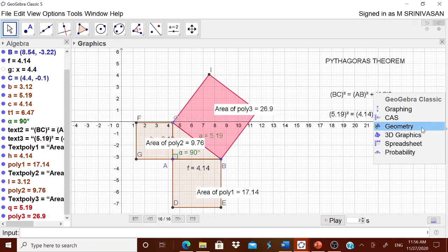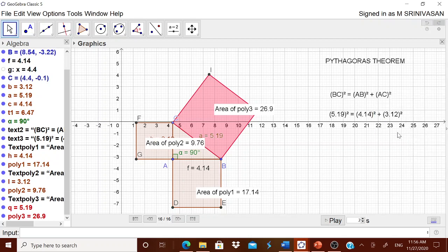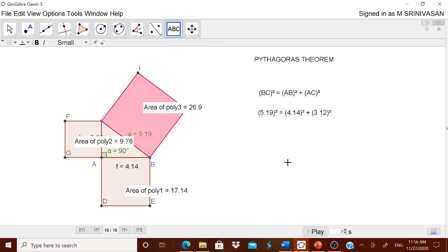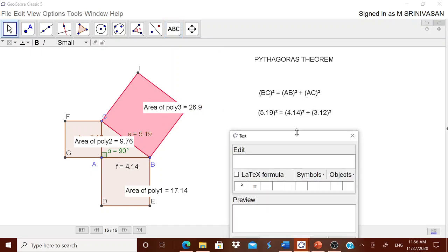We will polygon. It has taken the fourth. Let us go to this geometry once again. Come back to this ABC. This BC square. Therefore we want this BC square. It is poly 3. Therefore from the object you go for poly 3. Is it? 26.9 is equal to then the AB square from the figure you can work out that it is poly 1. Plus the second one is poly 2.